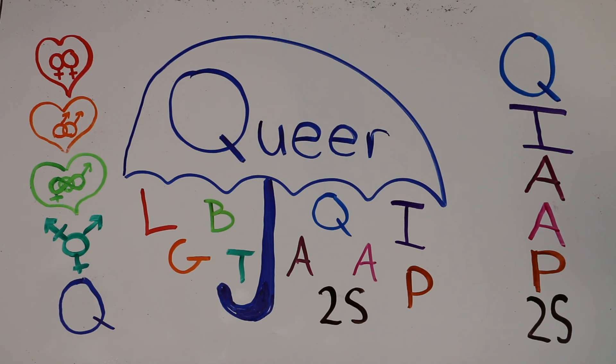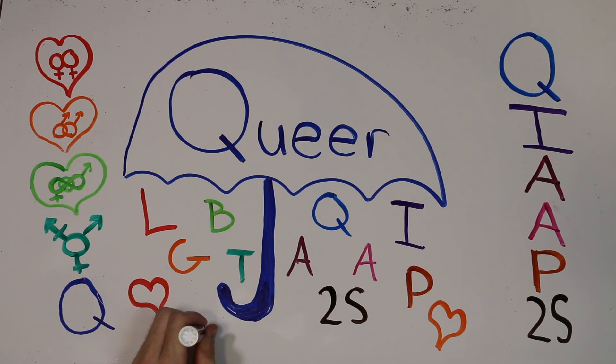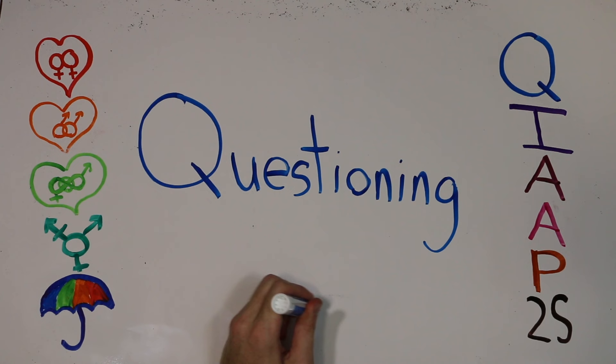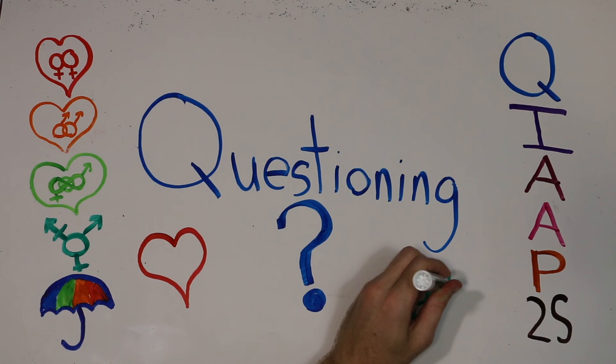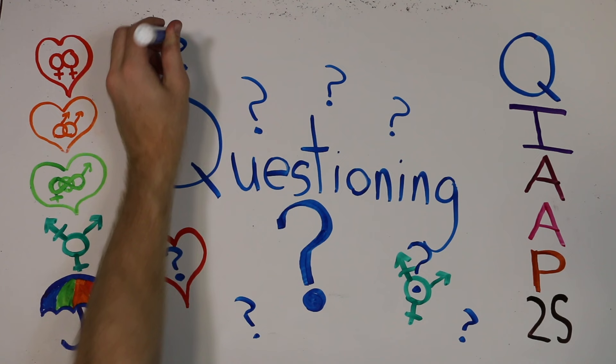Some people also use queer as a general term to identify themselves if they don't feel that they fit into a certain letter or group. The next Q also covers a large group, but this one stands for questioning. The term questioning describes people who are wondering whether or not they belong in the queer community or are still questioning their gender identity or sexual preference.